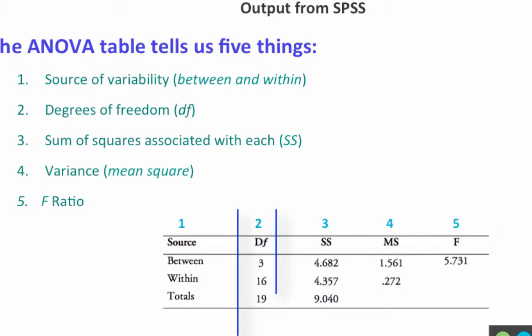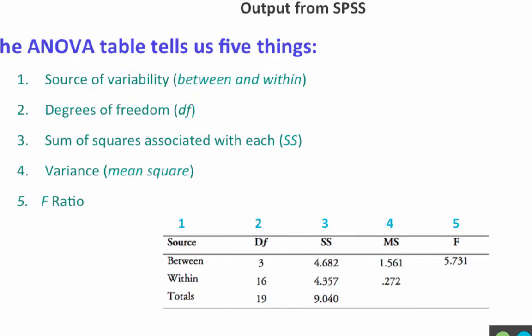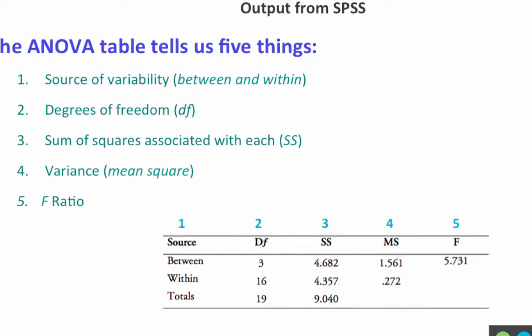Second, it tells us the degrees of freedom — that's the DF column — degrees of freedom between, within, and total. The sum of squares is in the third column, which we learned to calculate in the chapter on variability. Column four, MS, stands for mean square, and that is actually the variance. When you divide the sum of squares by the degrees of freedom you get the variance, so the mean square column is the sum of squares column divided by the degrees of freedom column. For example, divide 4.682 by 3 and you'll get 1.561. The mean square column therefore represents the variance between and the variance within.